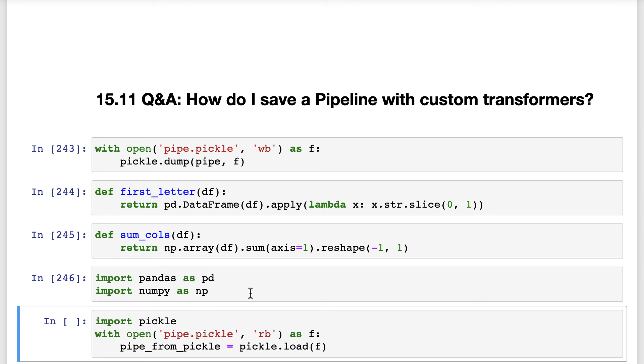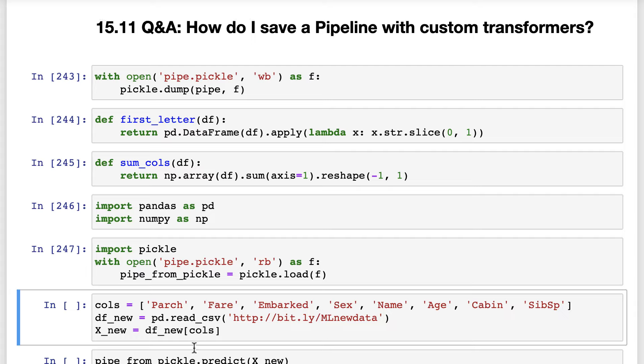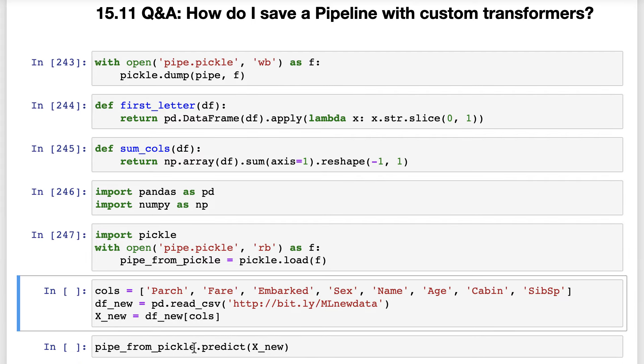Now we can import Pickle and load our saved pipeline into the pipe_from_pickle object. We also need to create the X_new object in our environment.